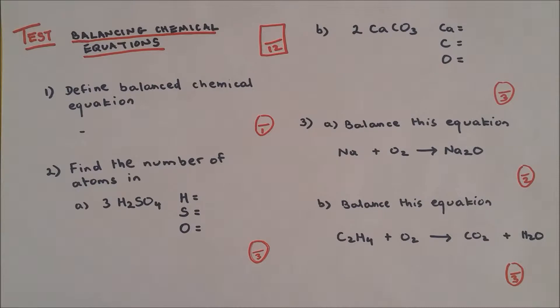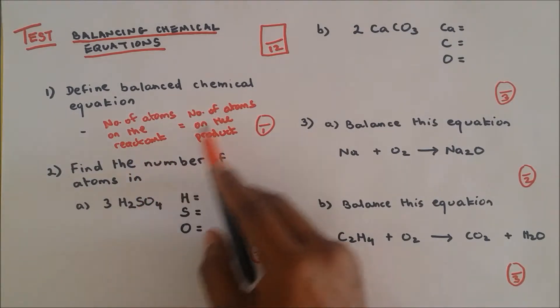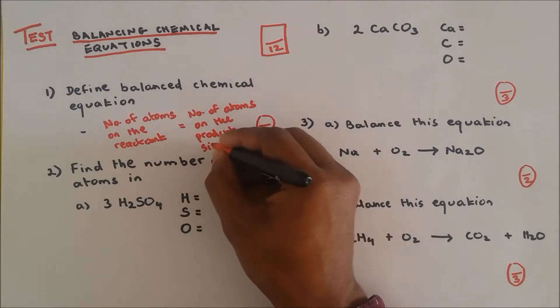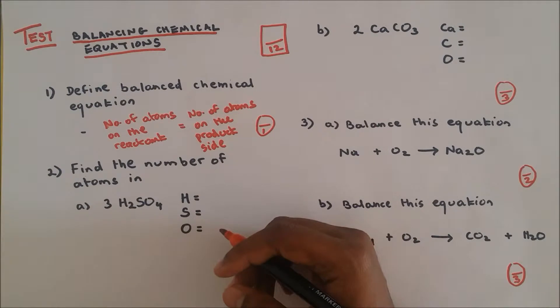Okay, here we go. Question number one: Define balanced chemical equation. The number of atoms on the reactant side is equal to the number of atoms on the product side, or you could say the number of atoms on the left hand side is equal to the number of atoms on the right hand side of a chemical reaction. So it's one out of one, well done.